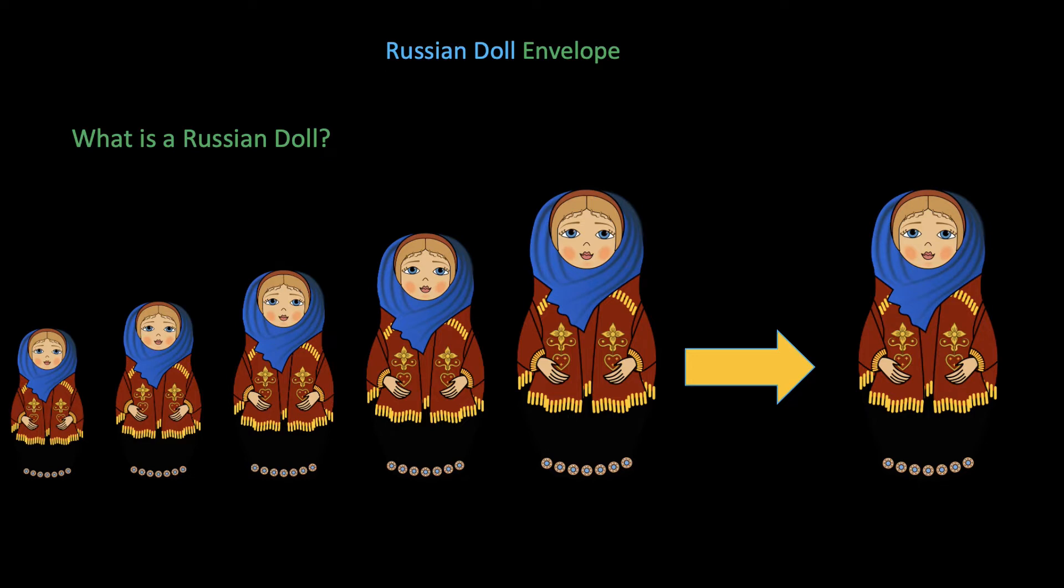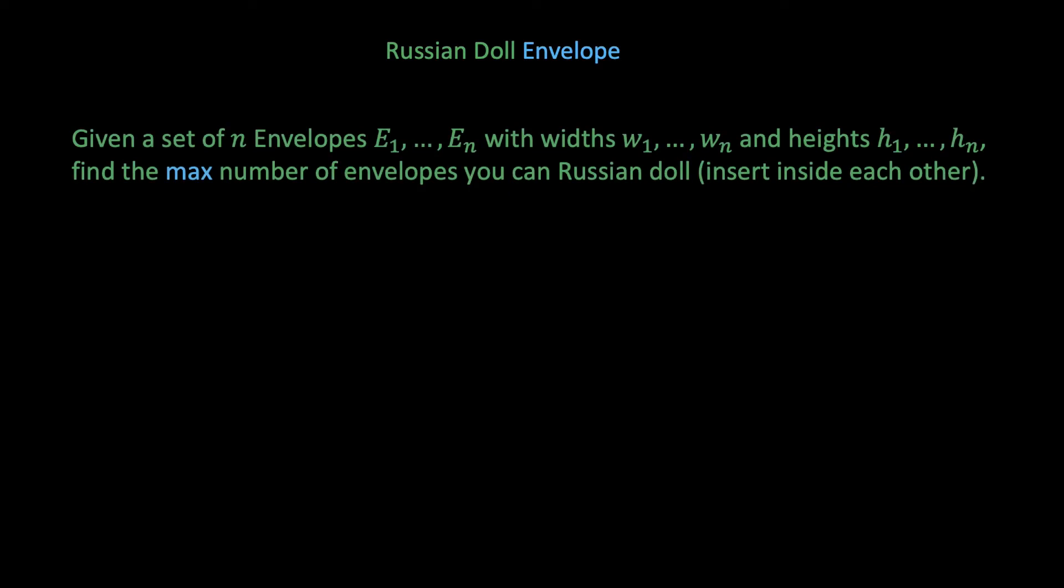So with that out of the way, I think the problem will make a bit more sense for you. In the Russian doll envelope problem, we're given a set of n envelopes, e1 to en, where envelope ei has width wi and height hi. We're tasked with finding the maximum number of envelopes that we can Russian doll, or insert inside one another.